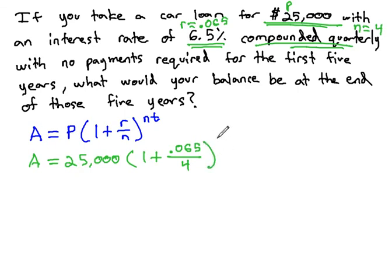All to the nt power. N is 4, again t is time. It's a five year loan we're interested in, so we're going to multiply by 5.